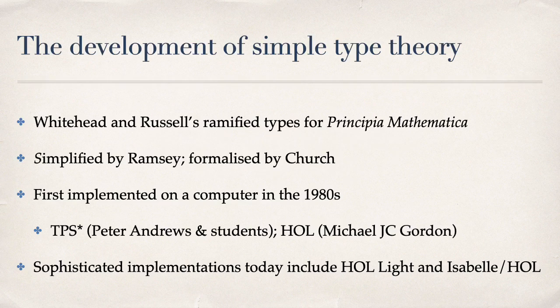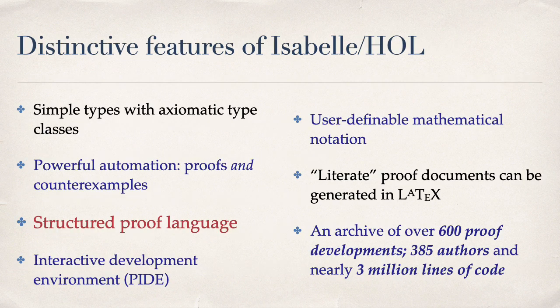We are using simple type theory here. It came from Whitehead and Russell's Principia Mathematica, which had ramified type theory, but the ramification didn't really work, so they added an axiom that cancelled it. This evolved into higher-order logic, implemented in various systems including Isabelle. Isabelle offers simple type theory augmented with axiomatic type classes, which work only at the level of types.